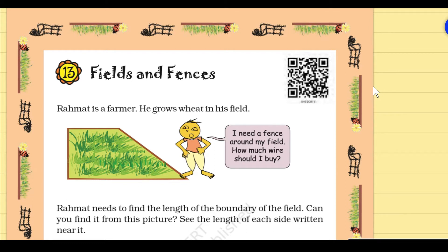Rahamat is a farmer. He grows wheat in his field. Rahamat is saying, I need a fence around my field. How much wire should I buy?